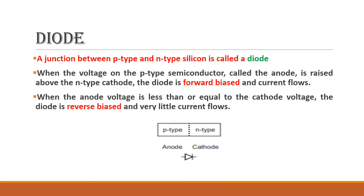A diode, which we have learned in lower classes, is formed by connecting a P-type and an N-type semiconductor, creating a junction with two terminals: anode and cathode. In forward bias, the P-type is connected to the positive terminal and N-type to the negative terminal, allowing current flow. In reverse bias, connections are reversed and there is no current flow, though a small leakage current may exist.